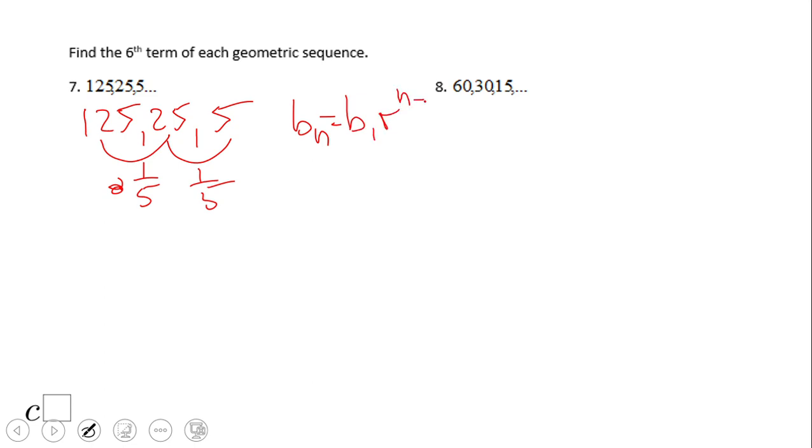We're going to find the sixth term. So we're going to have B sub six equals B1. B1 is 125 times the common ratio, which is one over five, to the six minus one. So yeah, that is going to be a very interesting fraction.